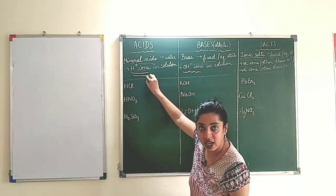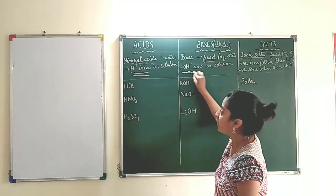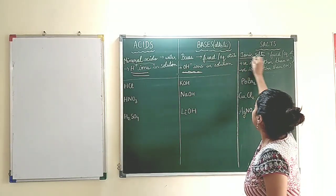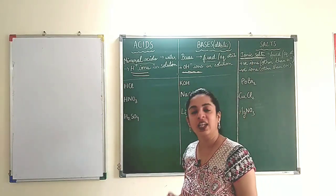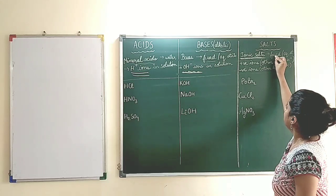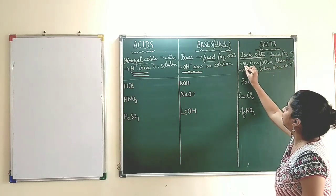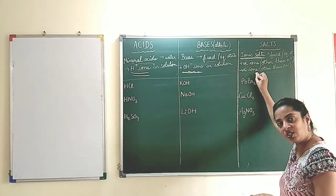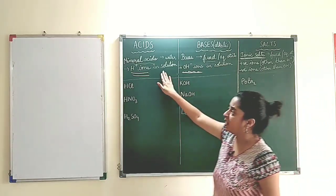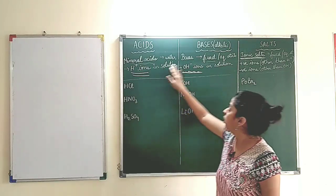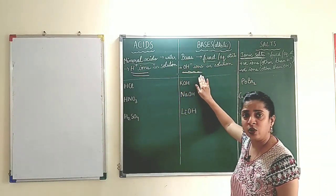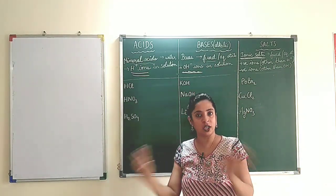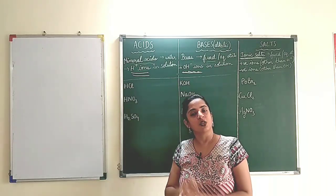So acids furnish H+ ions and bases furnish OH- ions in the solution. Now ionic salts — the salts which are ionic compounds — in fused or aqueous state conduct electricity and they furnish positive ions other than H+ and negative ions other than OH-. So acid gives H+ ion, base gives OH- ion, and salts give positive as well as negative ions but positive ions are not H+ and negative ions are not OH-.